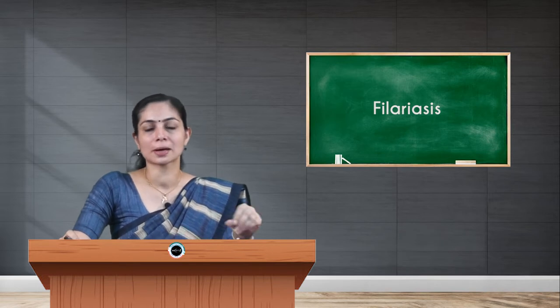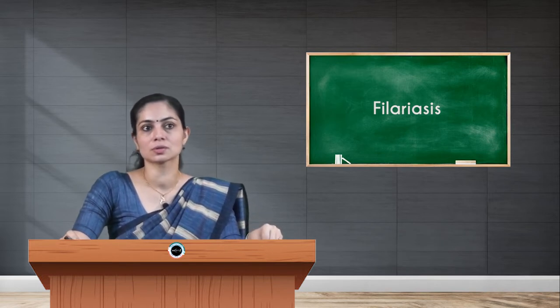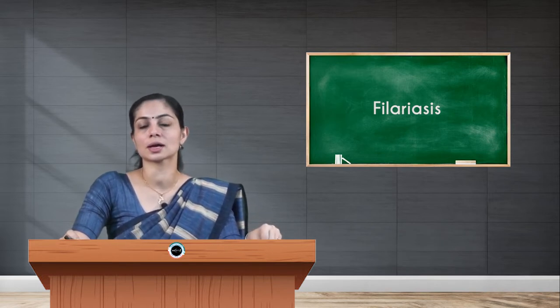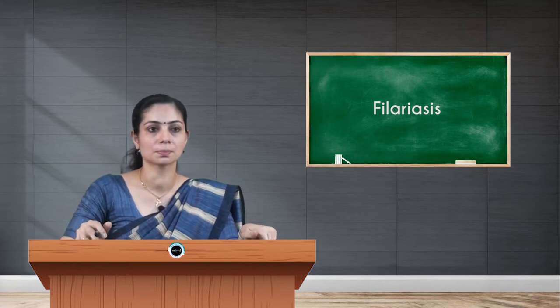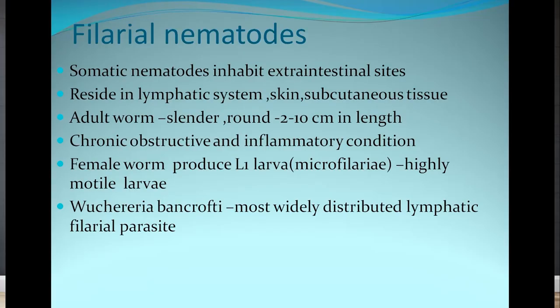Wuchereria bancrofti is a somatic nematode which inhabits an extra-intestinal site, for example the lymphatic system, skin, and subcutaneous tissue. There are two forms: one is the adult worm, and the second one is the larval stage. Adult worms of any filarial nematode are slender, round, 2 to 10 centimeters in length.